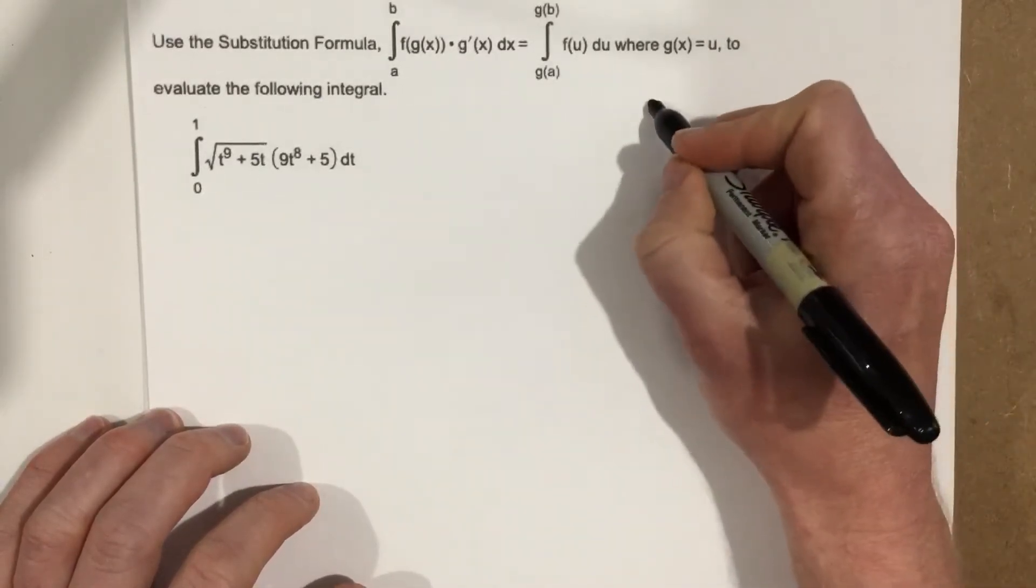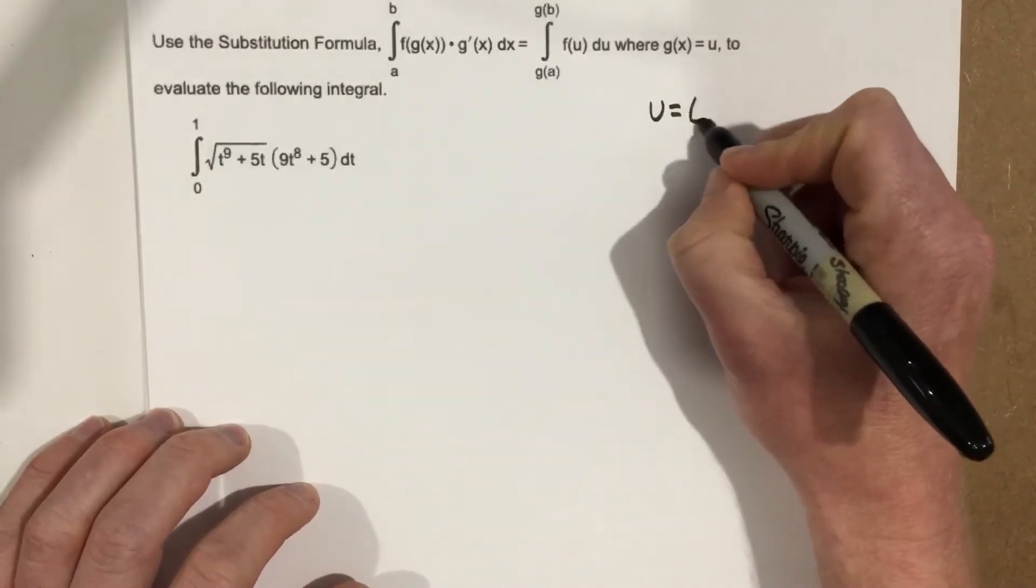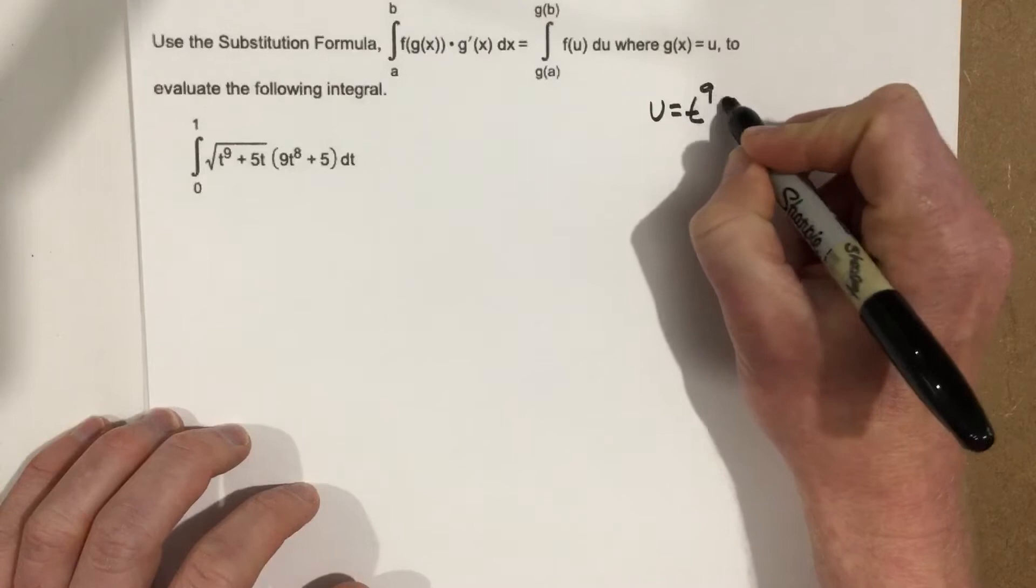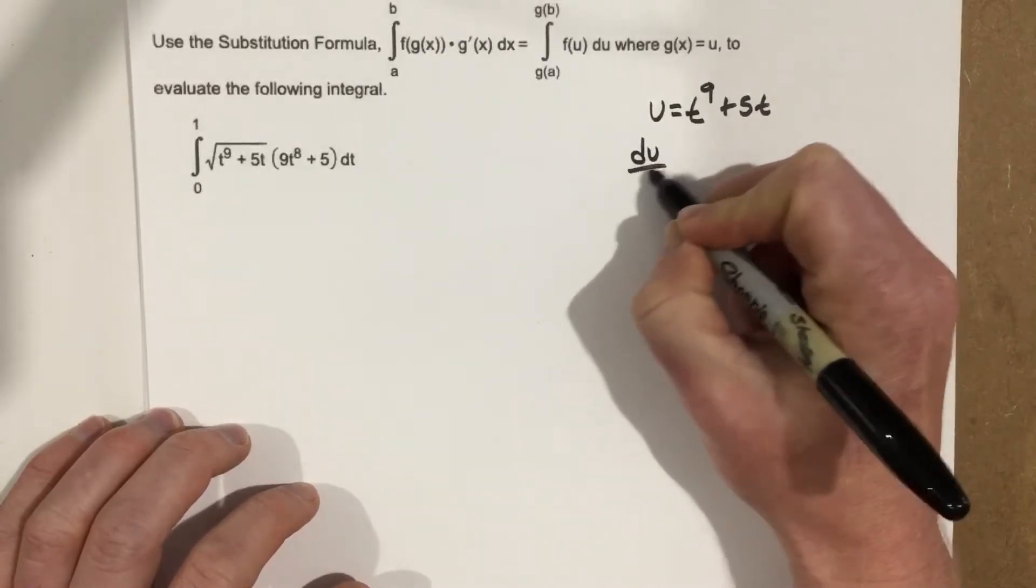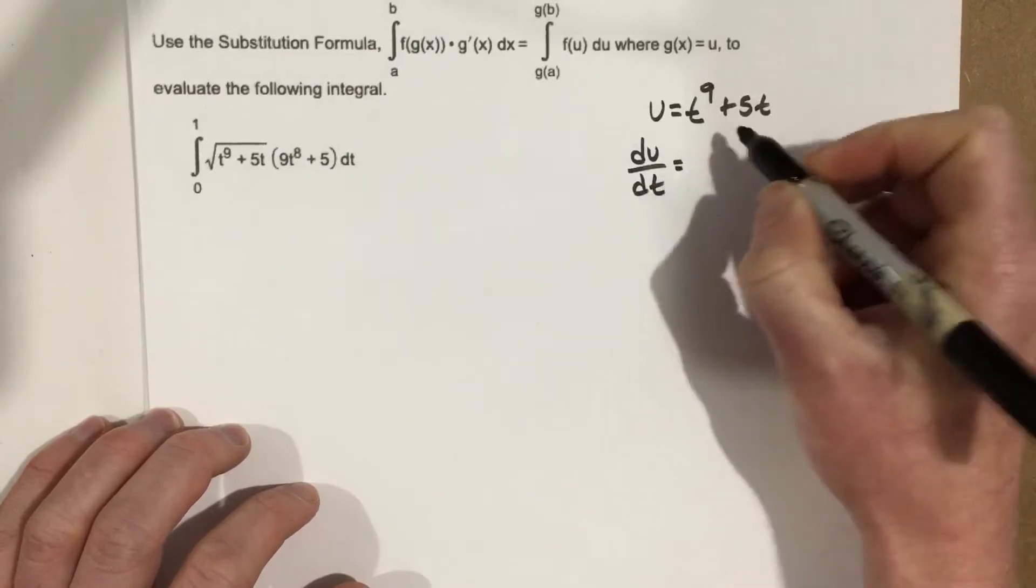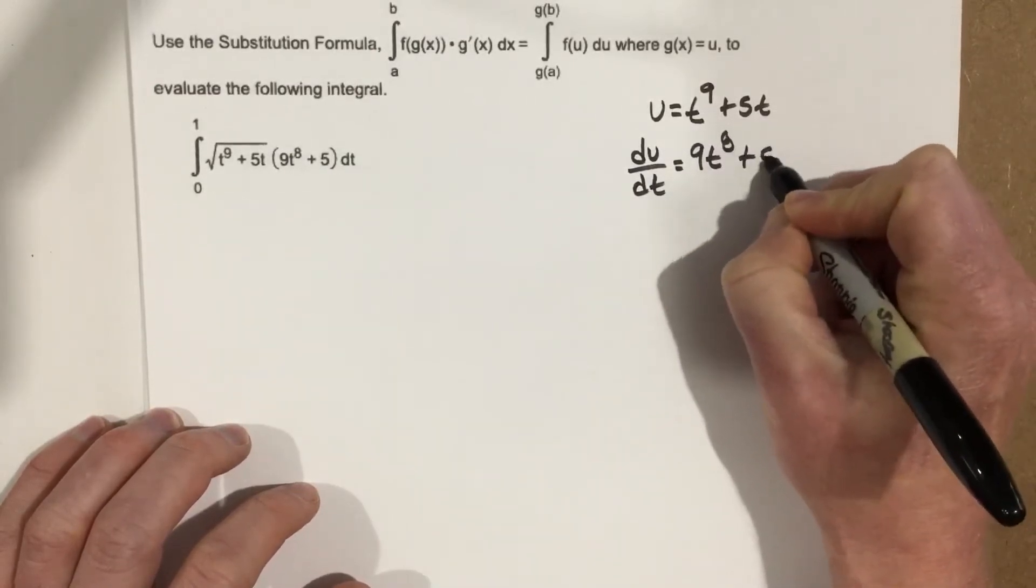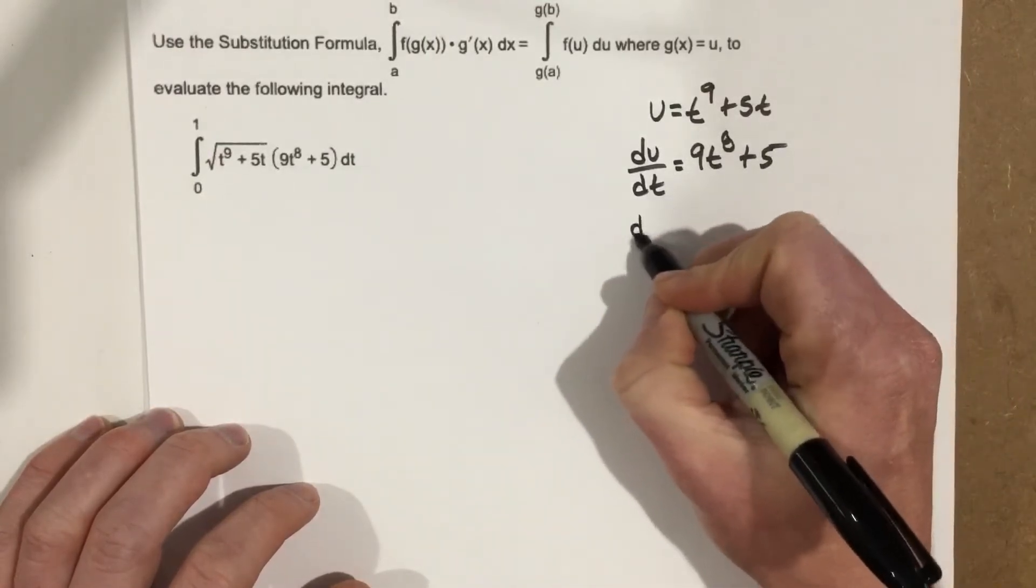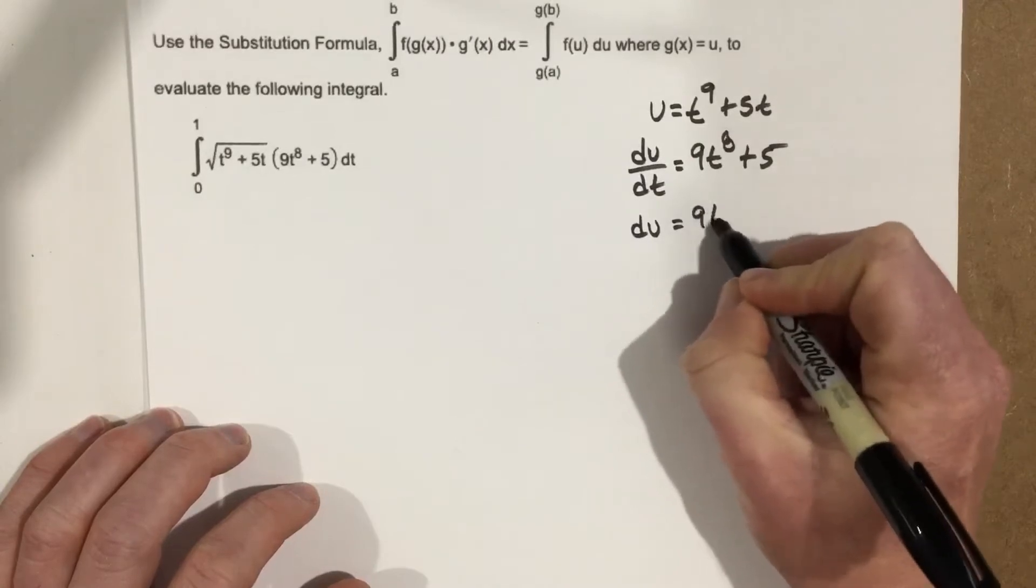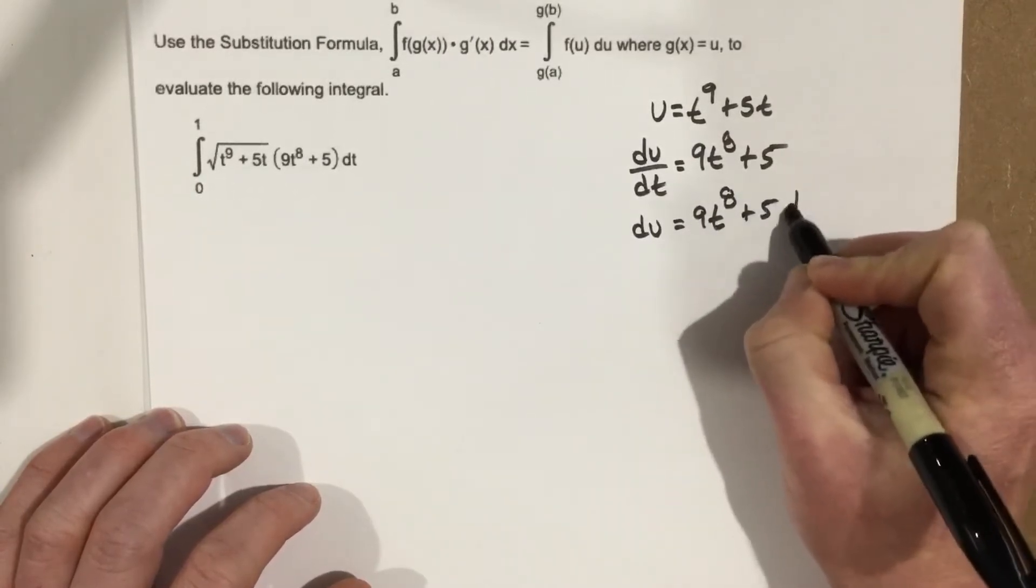I'm going to set the u value out to the right a little ways, so I have room to write. But u equals t to the 9th plus 5t. So du over dt is 9t to the 8th plus 5, when you do that derivative. Multiply by the dt, you get du equals 9t to the 8th plus 5 dt.